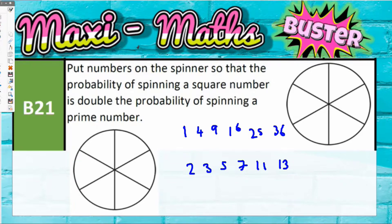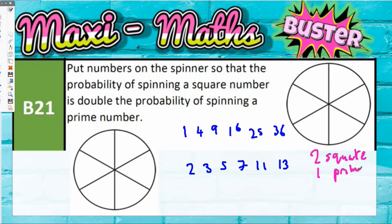We want the probability of square numbers to be double that of prime numbers, so we need double the amount of square numbers as prime numbers. You could have two square numbers and one prime number, or four square numbers and two prime numbers. Either option gives a probability of choosing a square that is double that of choosing a prime.